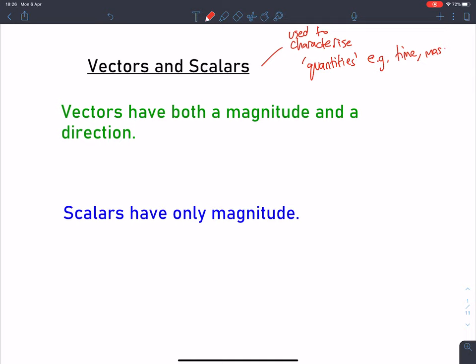For example, we would have time, mass and speed are all examples of quantity, force, energy, all of these things, so something that we can measure. We can describe all these quantities as either a vector or a scalar.